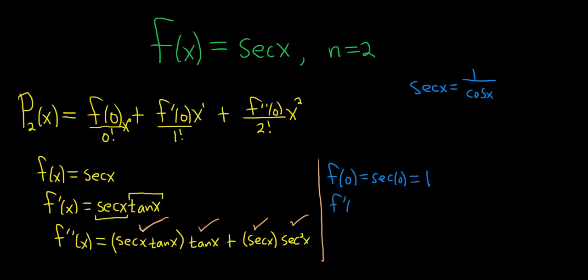f prime of 0 is equal to secant of 0 times tangent of 0. So it's going to be 1 times tangent of 0, which is 0. So we get 0.